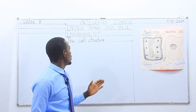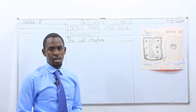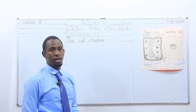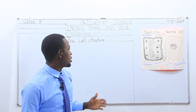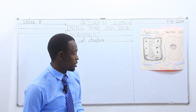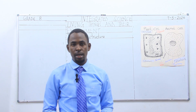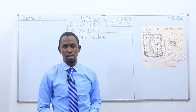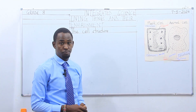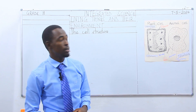Before we go further, I want us to understand what the cell is. The cell is the smallest structural and functional unit of living organisms. Both animals and plants have cells.